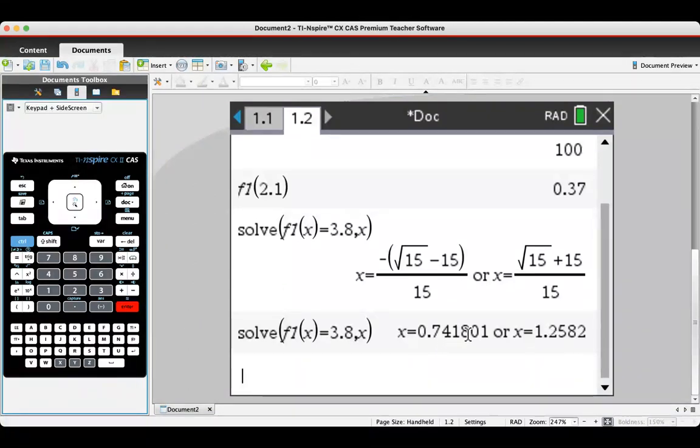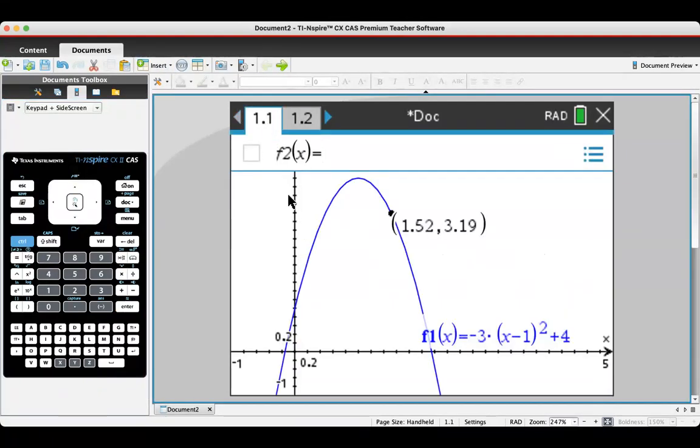So now that we've got our two particular values, I can go back to the graph, for example, and know that that particular value, 0.75, is about there and about there. So I've got a there and there, so I can see it on the graph roughly, but then I've got the very specific values over here.